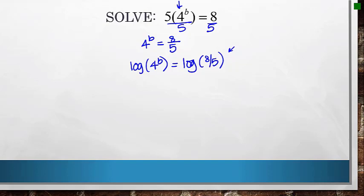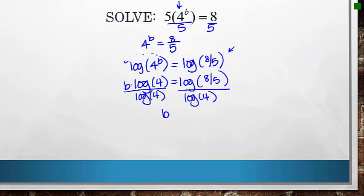Now that I have this, I've done the logarithm to both sides, I can use that power property to move that b in front. And now I just have b times the logarithm of 4 equals the logarithm of 8 fifths. To get the b by itself, divide both sides by log of 4. You get the exact answer for b is the log of 8 fifths over the log of 4. If you were asked to approximate this answer, that's about 0.34.